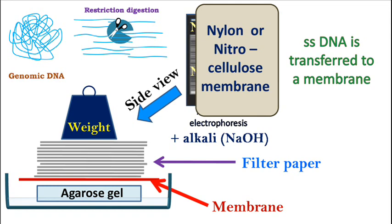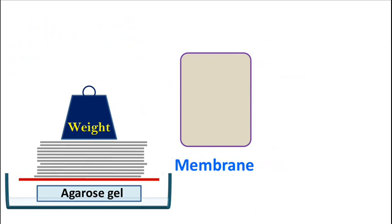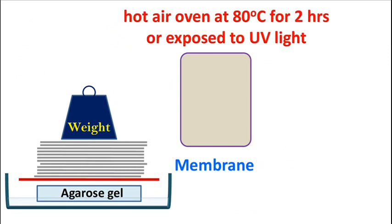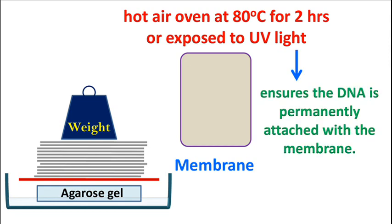Once the transfer is complete, the membrane is heated in a hot air oven or exposed to UV light for a few seconds. This ensures that the DNA is permanently attached to the membrane.